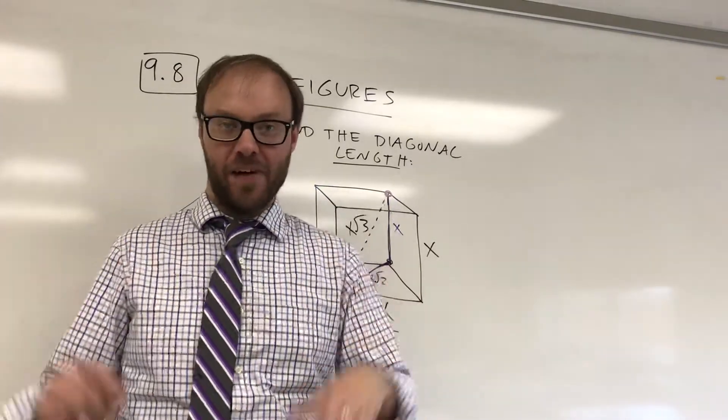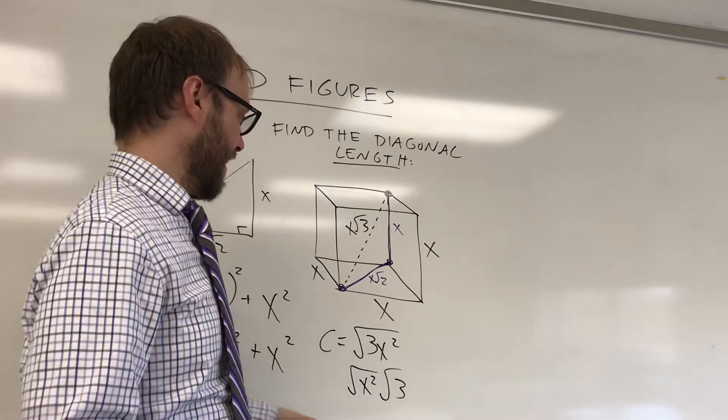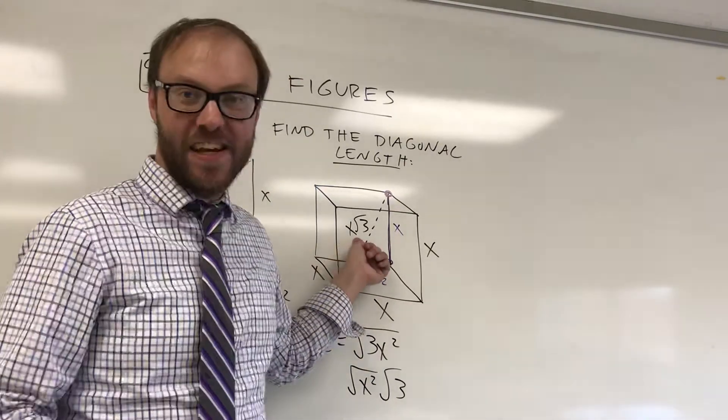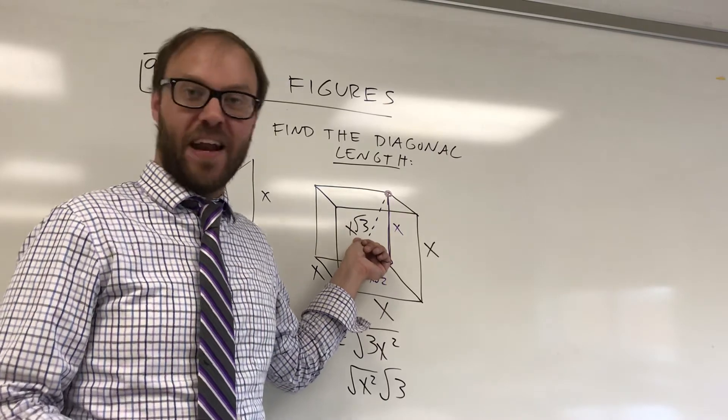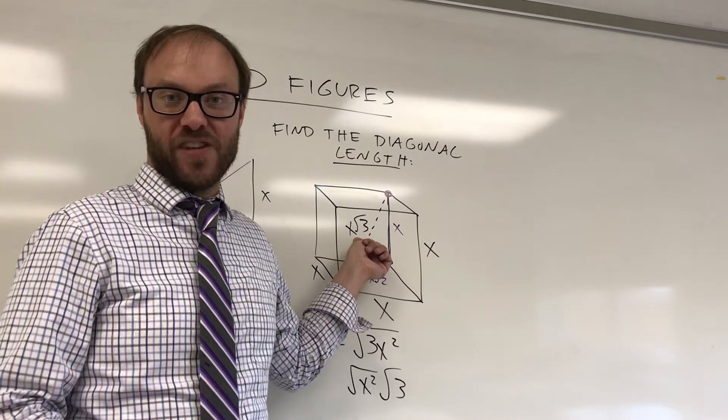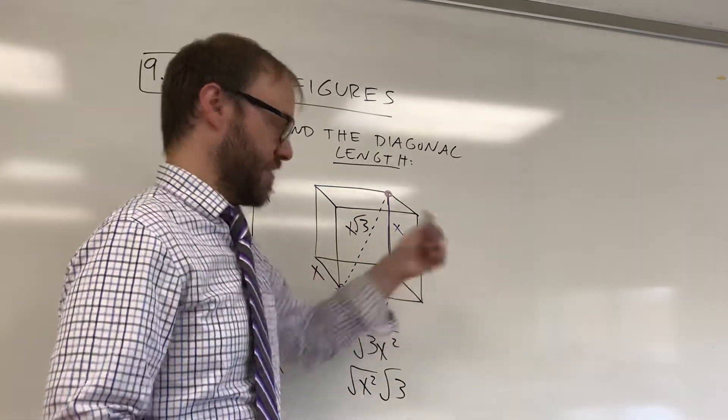Now, if it was something more complicated, say it was something like 7 radical 6, you would have to divide by radical 3. 7 radical 6 divided by radical 3 would give you 7 radical 2, and that would be each of your side lengths.